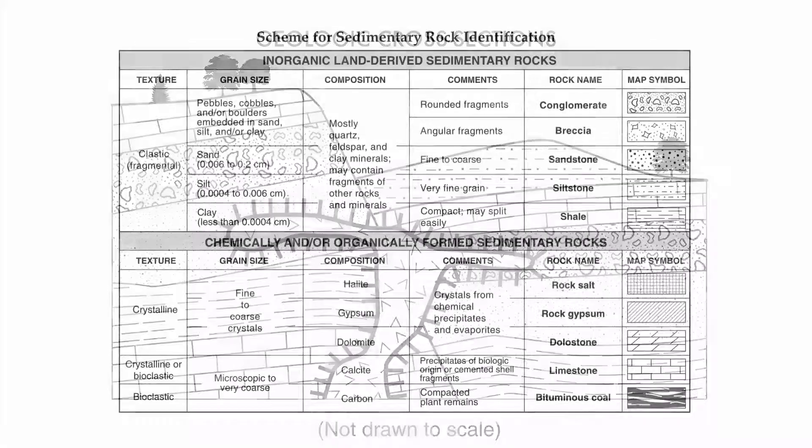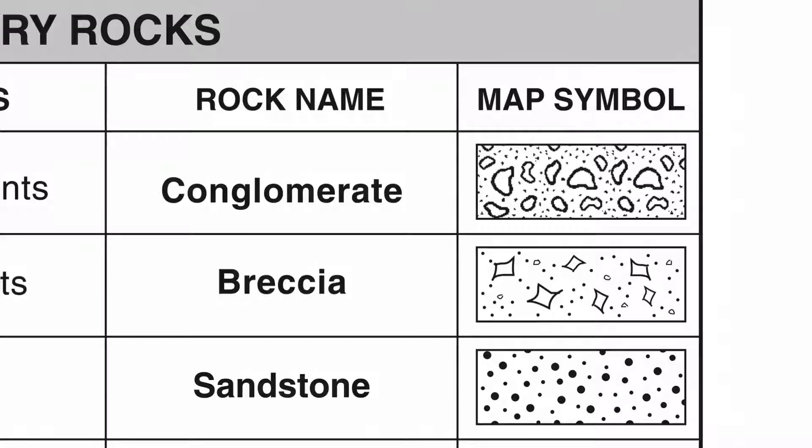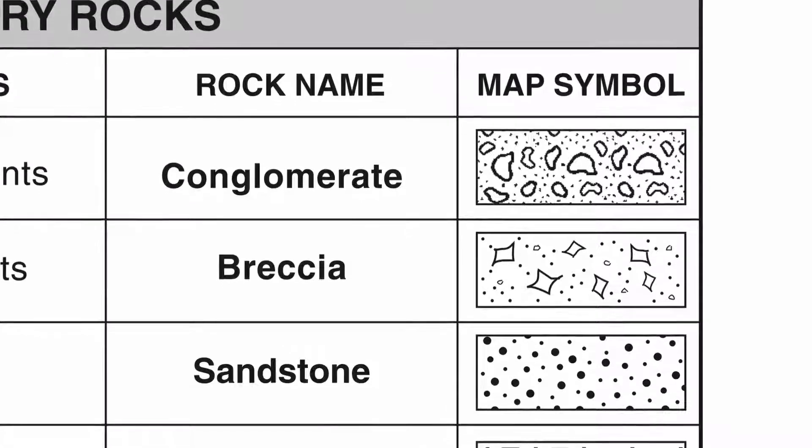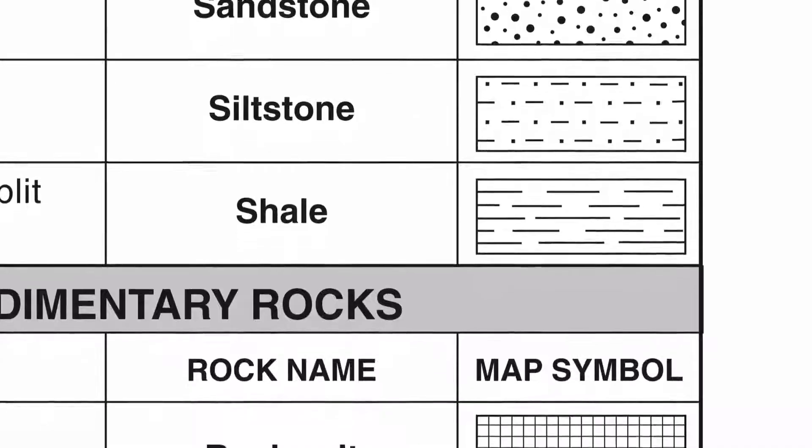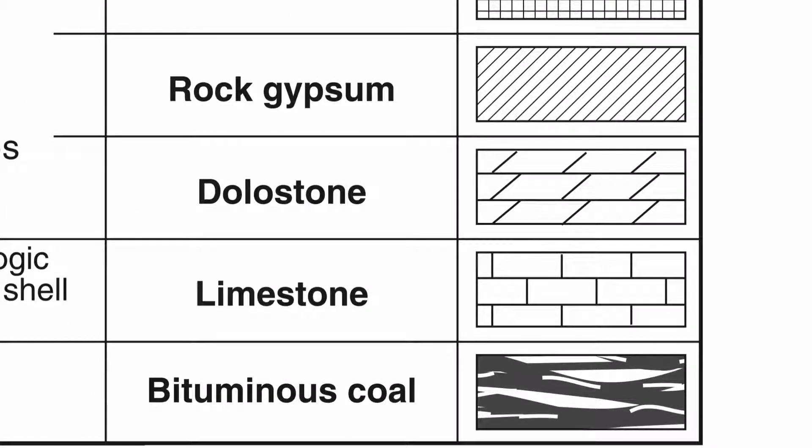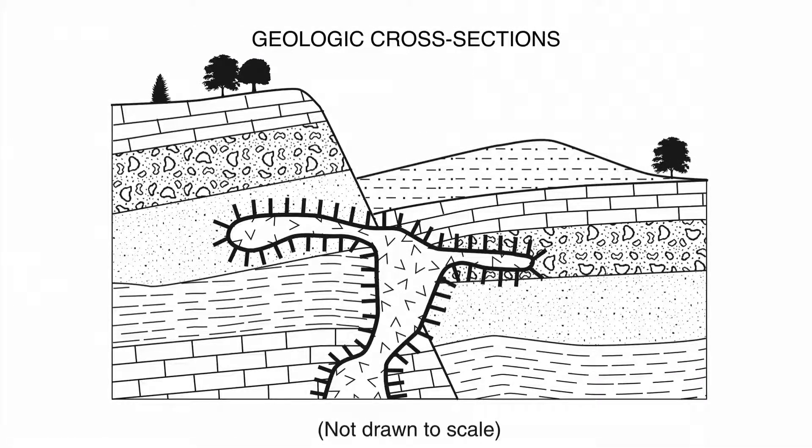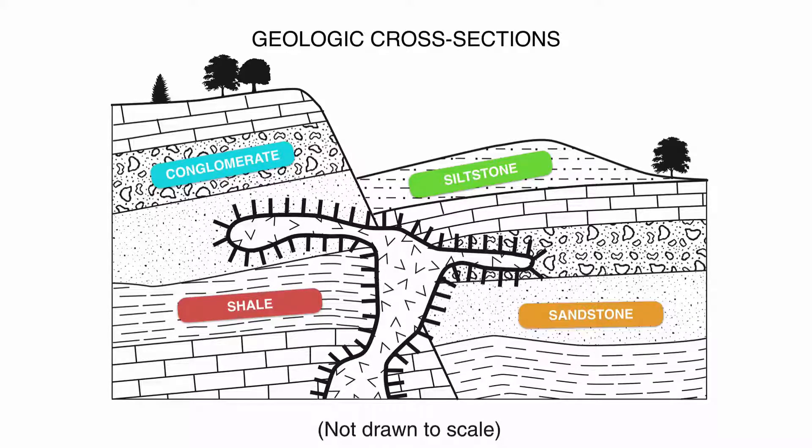To do this accurately, to really use these cross-sections to talk about the history of the Earth, we also need our reference table. Specifically, in our reference table, we need to look at the sedimentary rock chart, because the patterns, or the map symbols, tell us what kind of rock we're looking at. So conglomerate, breccia, sandstone, siltstone, shale, all the way down to bituminous coal. Those map symbols help us identify the layers. So we can say, I have a layer of conglomerate because that's the map symbol. I have a layer of siltstone, I have a layer of shale, I have a layer of sandstone.